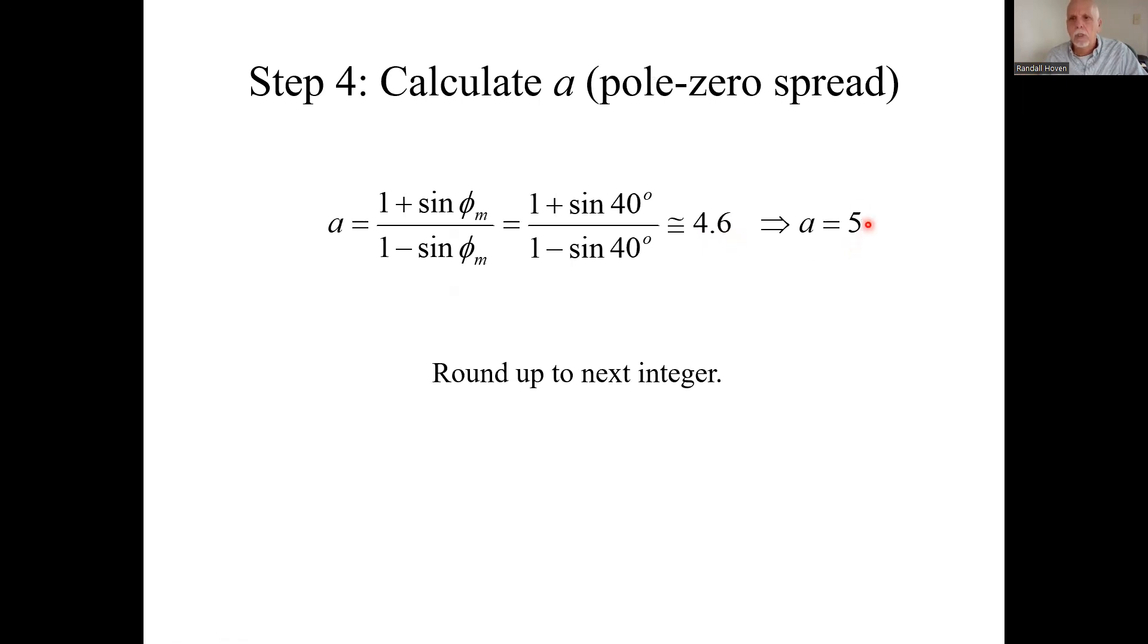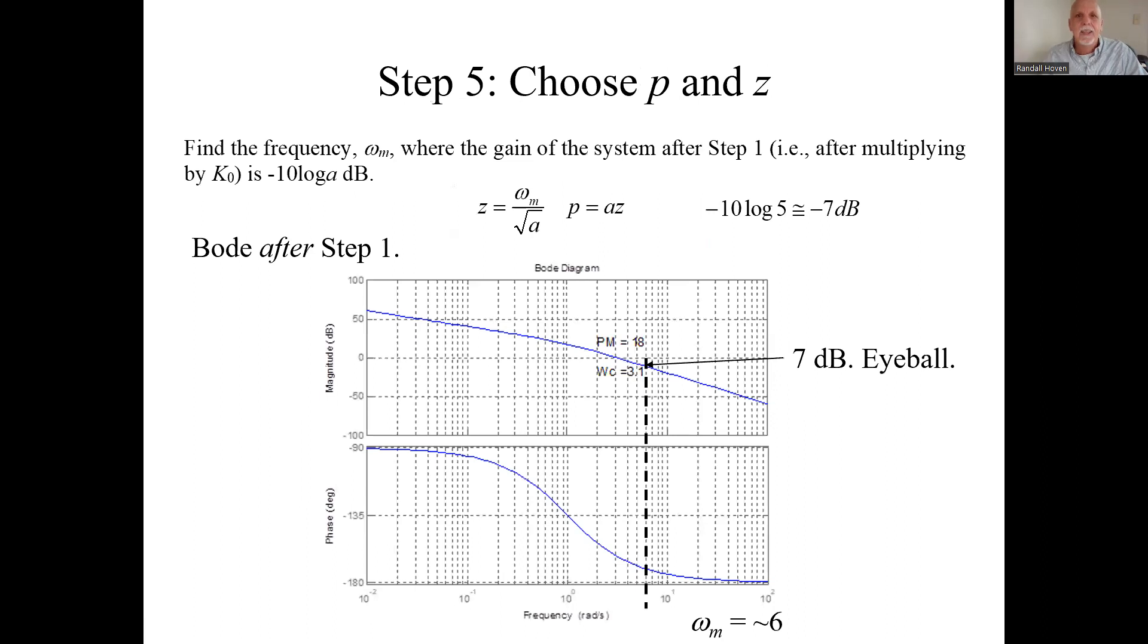Round it up to the next whole number, we'll say a equals five. So we've got our a, got our phase margin, we've got our a. Step five is choosing p and z, but we need to do that in little steps.